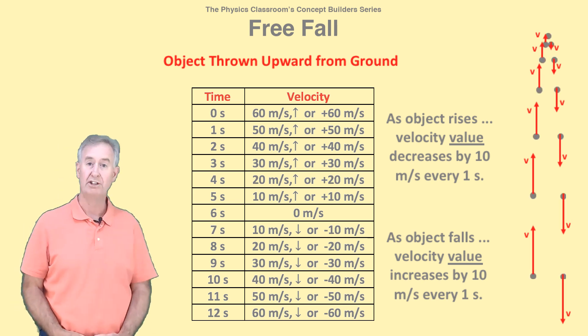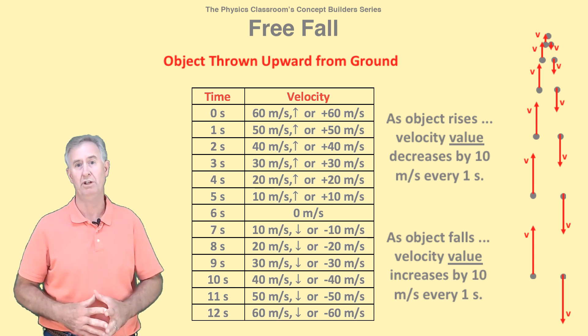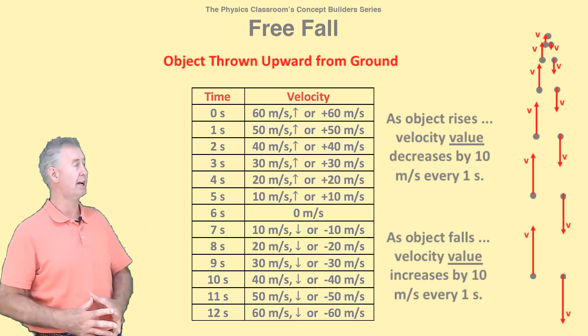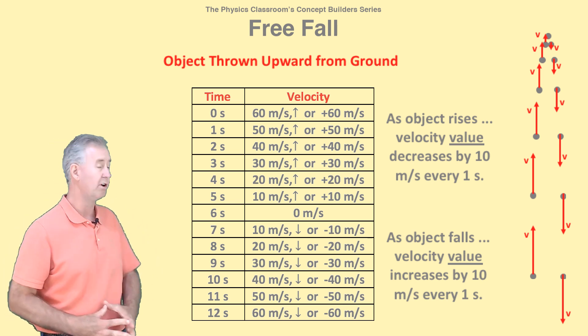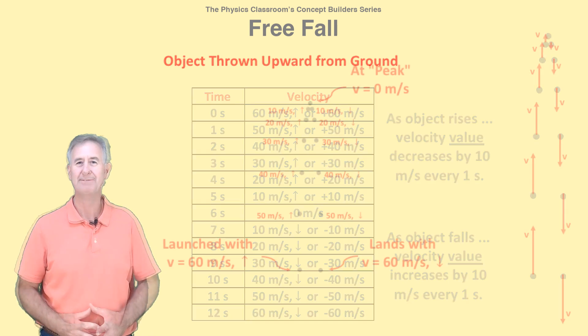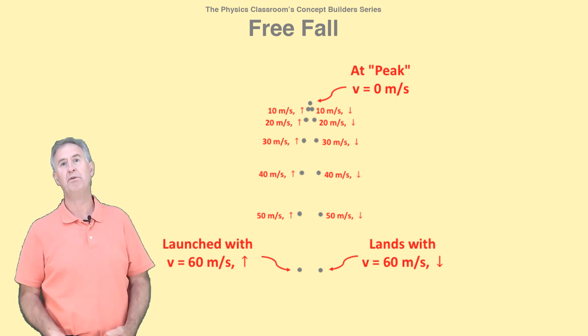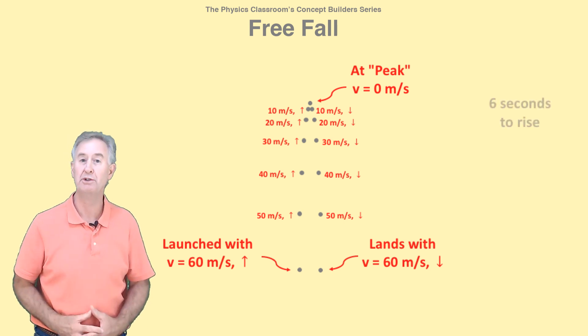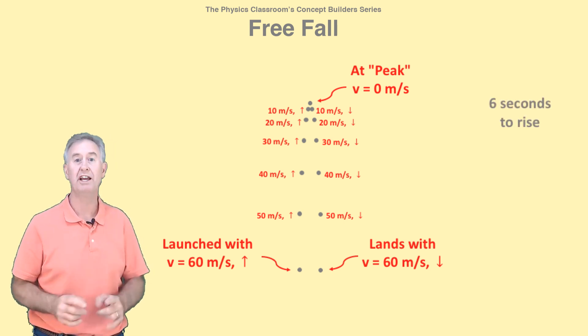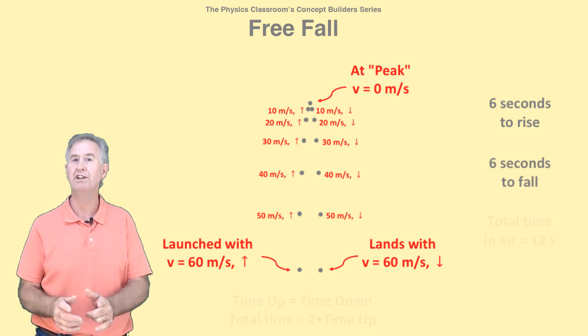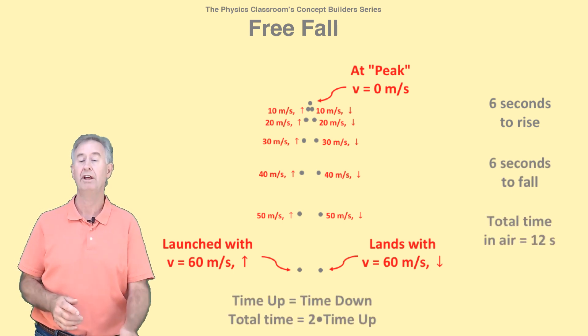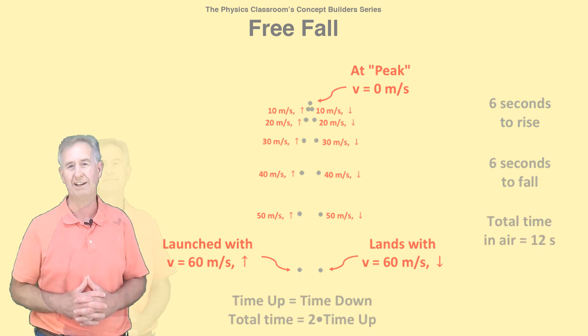The direction of the velocity is in the direction of the motion, always for free fall or any type of motion. So as the object rises, it's directed upwards, and as it falls, it's directed downwards. An important position on this trajectory is the highest position, where the velocity is momentarily zero meters per second. If thrown upwards at 60 meters per second, it would take six seconds to reach this highest point, another six seconds to fall back to the ground, and a total time in the air of 12 seconds.